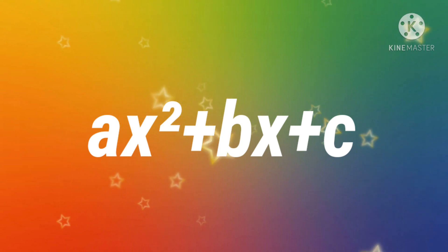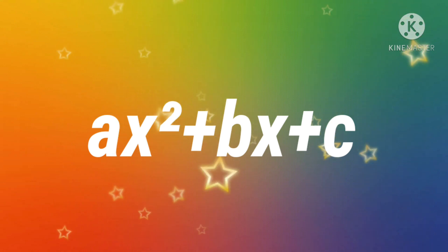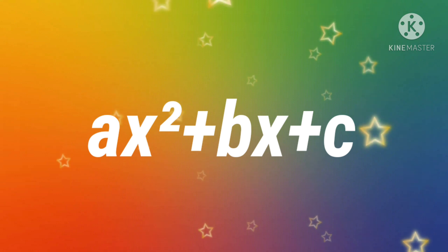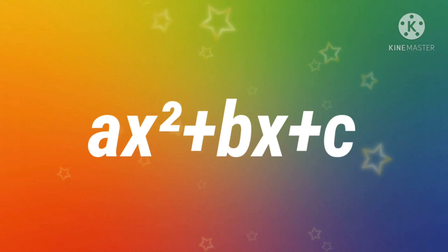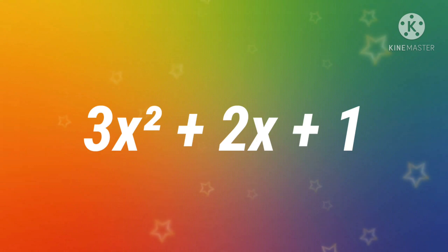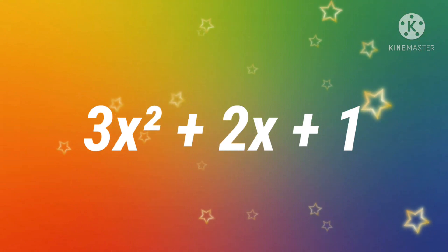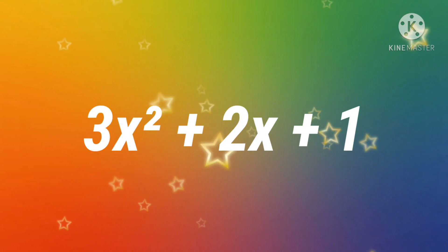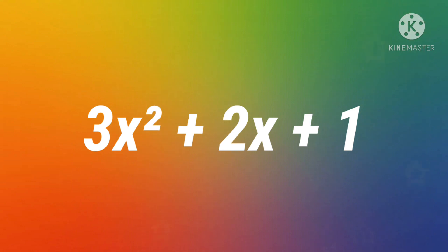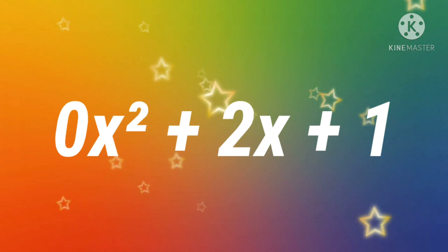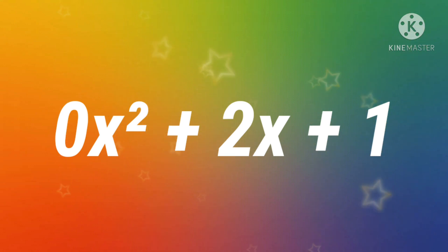The general form of a quadratic polynomial is ax squared plus bx plus c, where x is an unknown variable and a, b, c are real numbers. If a is equal to 0, then it becomes a linear polynomial.